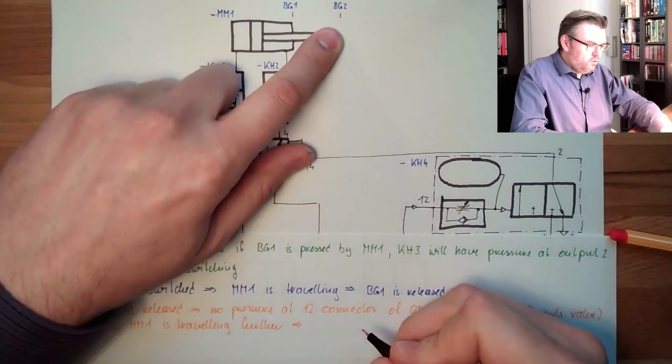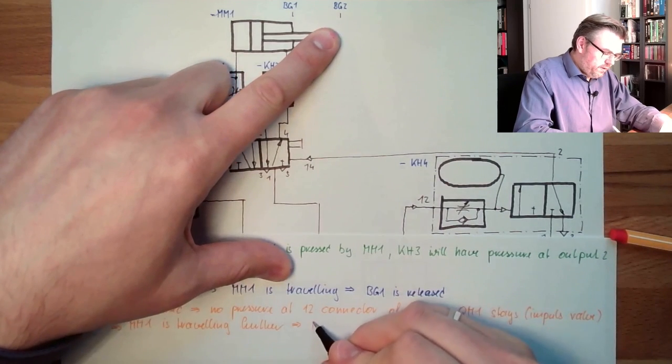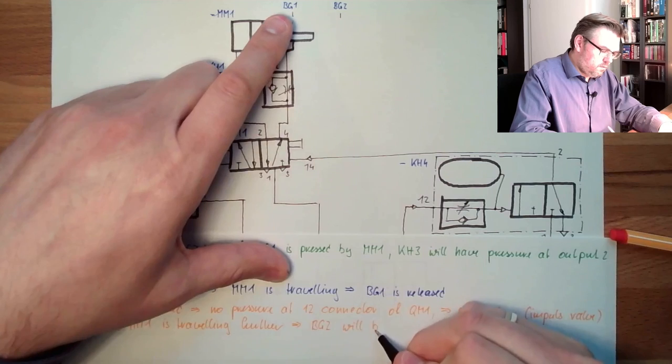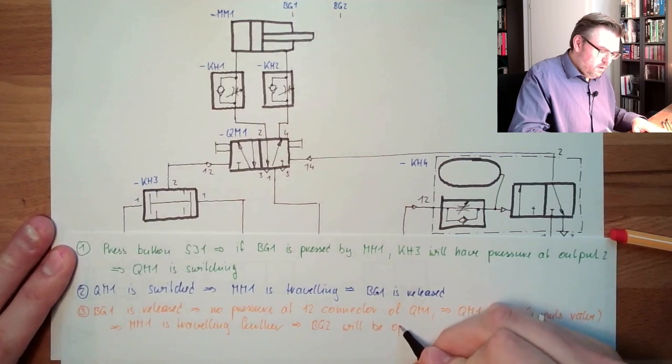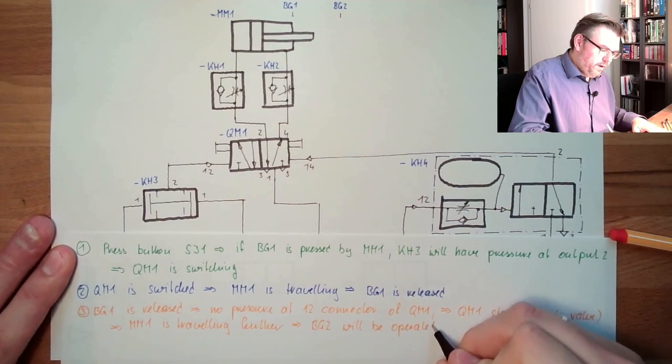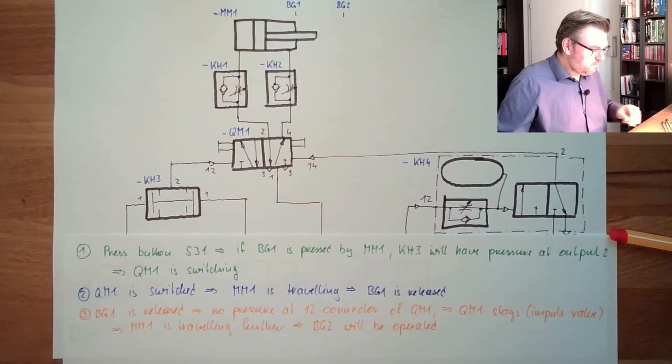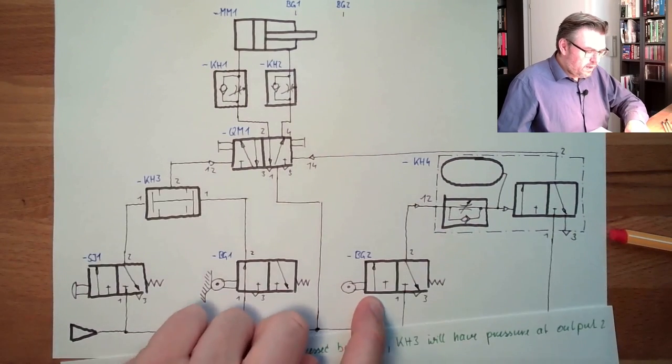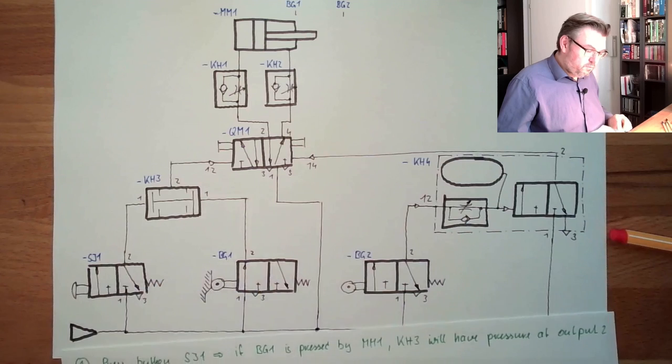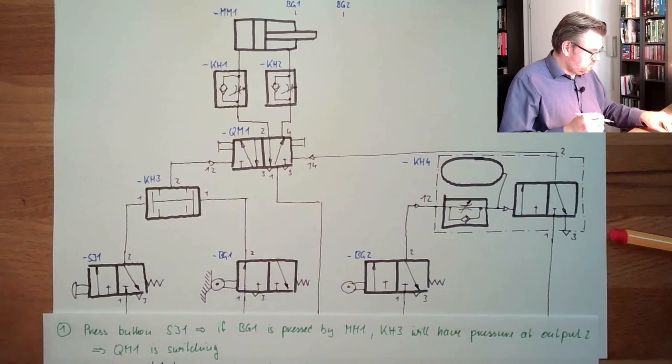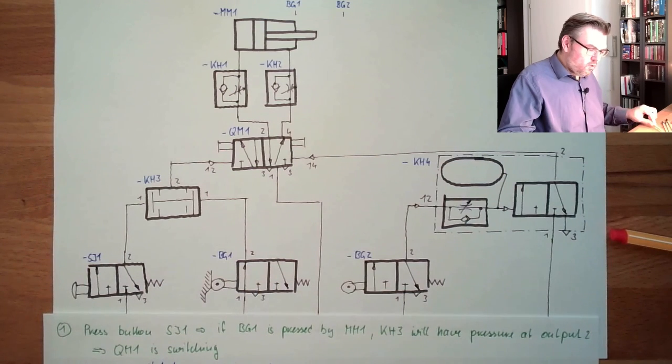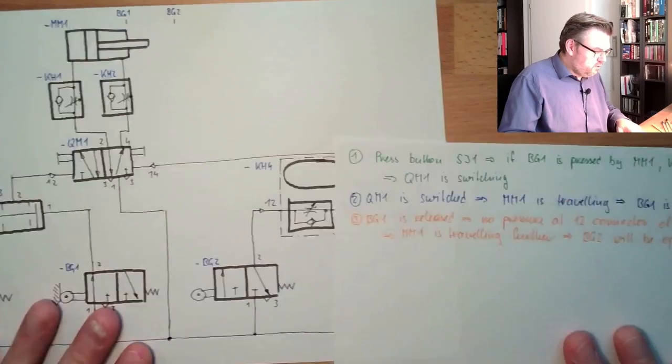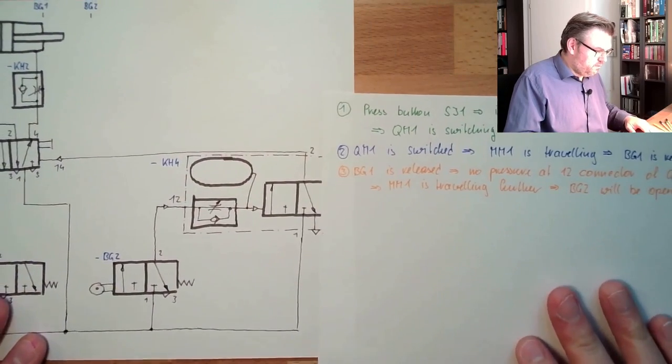QM1 stays impulse valve. Because at one four, there is no pressure currently. Because it's here, there's no pressure. It is relieved here. So QM1 stays. This means MM1 is traveling further, which will then lead to BG2 will be operated.